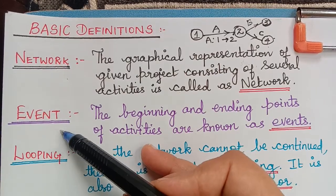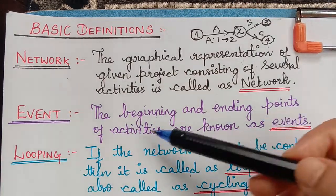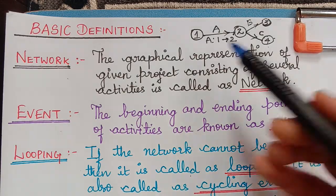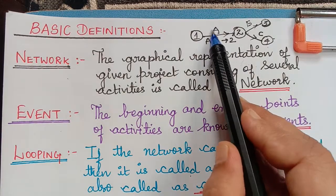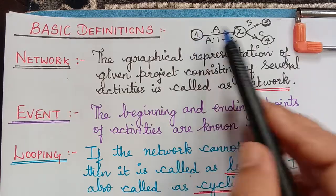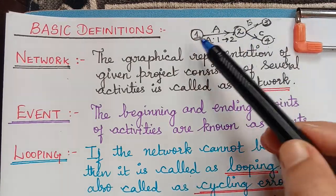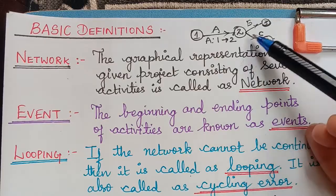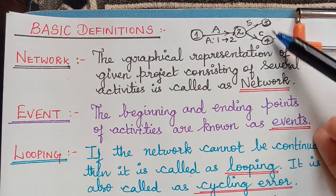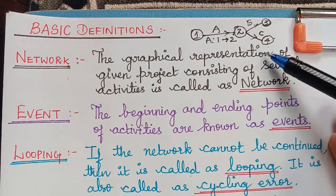Now here we have the event. The beginning and ending points of the activities are known as events. For activity A, the beginning point is 1 and the ending point is 2. This beginning and ending point are known as events. Also nodes 3 and 4 are all known as events.